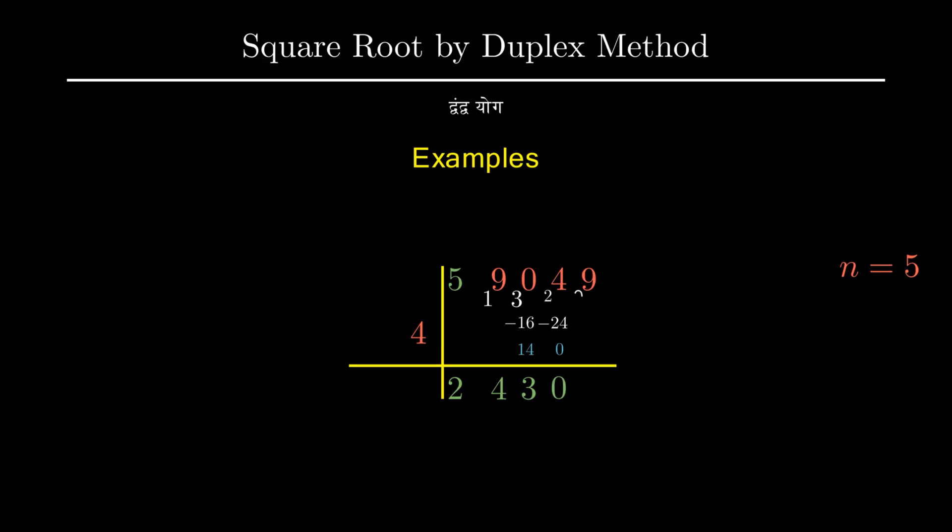To find the next digit of our final answer we will have to calculate the duplex of the last three digits that is 430. The duplex of this number will be given by 2 times 4 times 0 plus 3 square. This will give us 9.